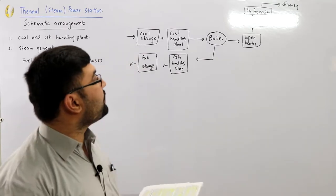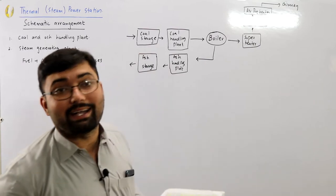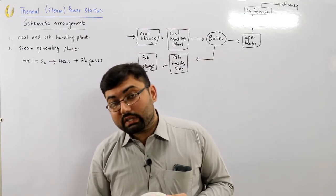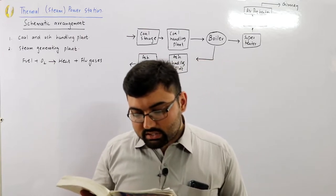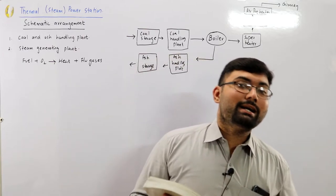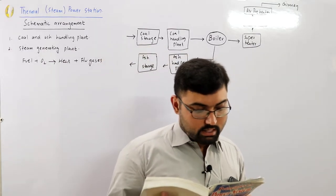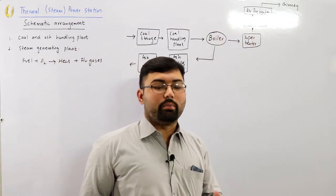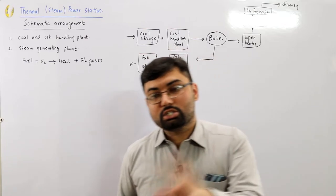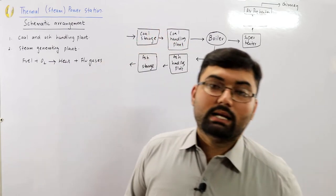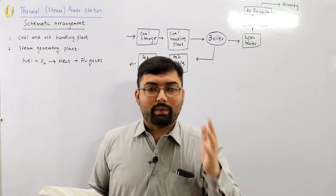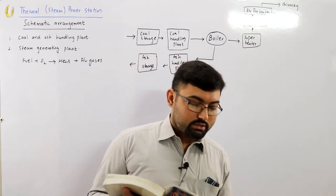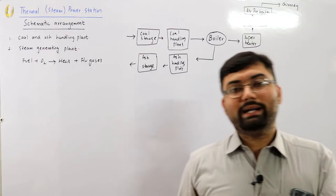The superheater: the steam produced in the boiler is wet, so it is passed to the superheater, which increases its temperature and dries it up — the steam temperature is raised beyond the boiling point of water using the heat from the flue gases on their way to the chimney. Superheating provides two principal benefits: increased overall efficiency, and dry steam is supplied to the turbine, preventing corrosion.